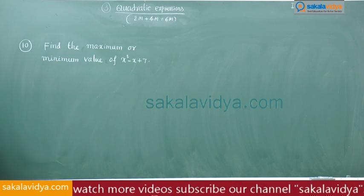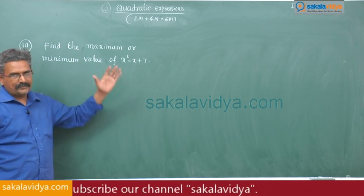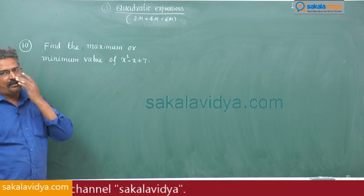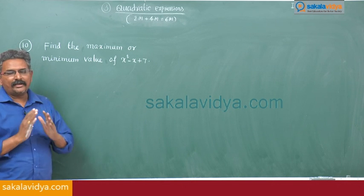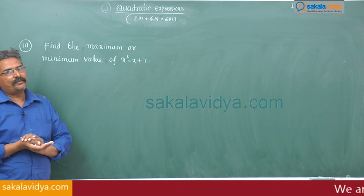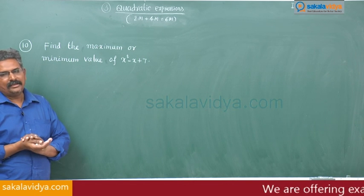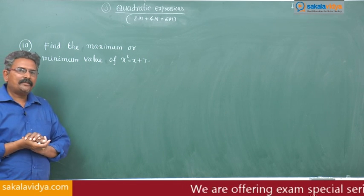That means either maximum or minimum value of this expression we have to find out. So how to find out maximum or minimum value of a quadratic expression ax square plus bx plus c? We have the formula: 4ac minus b square by 4a.